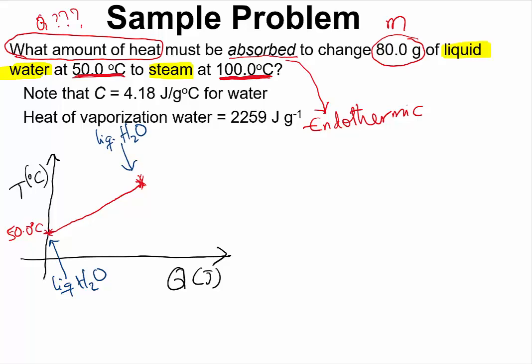When you continue to supply energy to liquid water at 100 degrees Celsius, the temperature will not change. All that would happen is that the liquid water will transition into gaseous water. So this will be steam at 100 degrees Celsius.